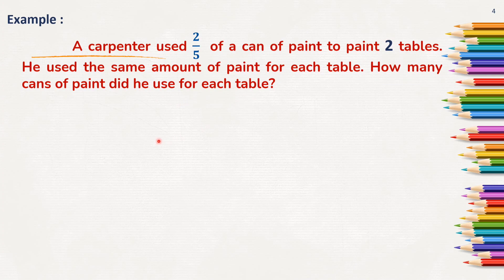That means, here we got to know the number of cans used to paint 2 tables. That is 2 by 5. Here, we need to find the number of cans used to paint 1 table. So, 2 by 5 divided by 2. If we do, we will be able to find the answer.